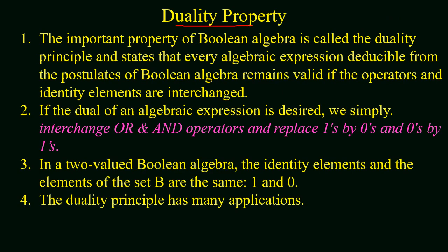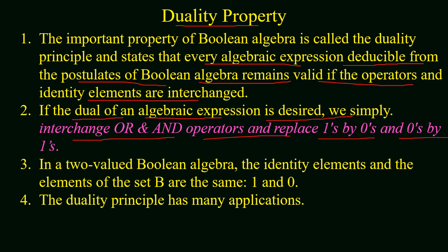The first important property of Boolean algebra is known as the duality principle, which says that every algebraic expression deducible from the postulates of Boolean algebra remains valid if the operators and identity elements are interchanged. If we have an algebraic expression and wish to find its dual, it can simply be obtained by interchanging OR and AND operations and replacing 1s by 0s and 0s by 1s.